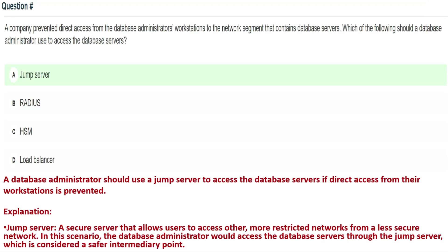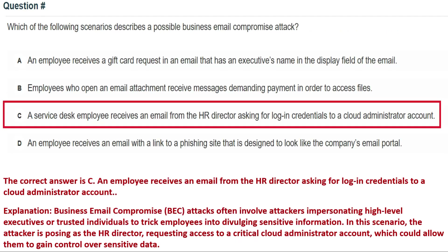Next question: a company prevented direct access from database administrators' workstations to the network segment containing database servers. Which of the following should a database administrator use to access the database servers? Option A: jump server, Option B: RADIUS, Option C: HSM, Option D: load balancer. The correct answer is Option A: jump server. A jump server is a secure server that allows users to access more restricted networks from a less secure network, acting as a safer intermediary point.